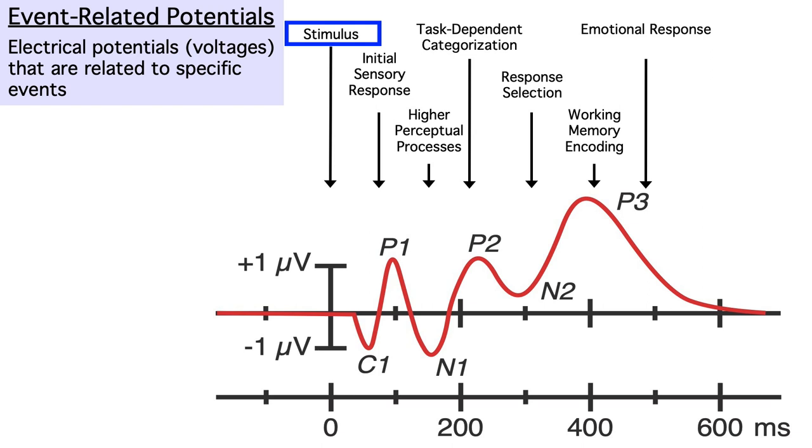For a visual stimulus, we initially see this C1 wave, which comes from primary visual cortex. Then we see this P1 wave, which comes from higher level visual areas. We then see activity related to stimulus categorization, response selection, and working memory encoding. For stimulus with a strong emotional content, we might also see emotion related activity.